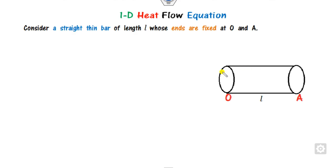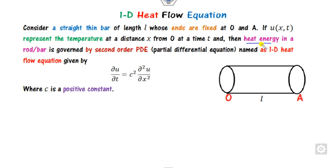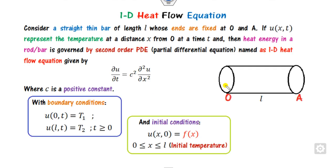What is the heat flow equation? Suppose you have some thin bar, or you can say a rod, whose ends are fixed at points O and A, separated by distance L. Heat flows in this direction, and the heat energy is governed by a second order differential equation, where C is a positive constant. Boundary conditions are given: at one end the temperature is T1, at the other end it is T2, and an initial condition gives the initial temperature distribution.